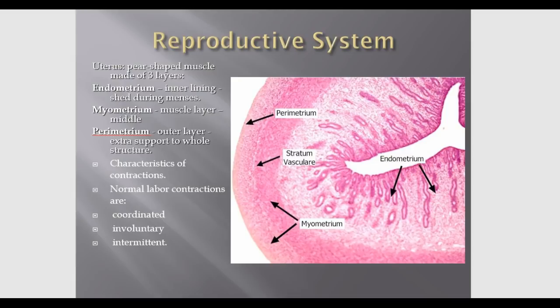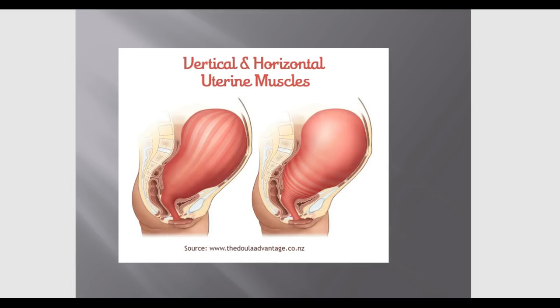Normal labor contractions are coordinated and involuntary. Early in pregnancy, contractions may be irregular and infrequent, but as she gets closer to term they become more regular and coordinated. Mom cannot start or stop them by conscious effort, and they're intermittent — which is important. Uterine contractions in labor start in the fundus and spread throughout the uterus, propelling the fetus downward.